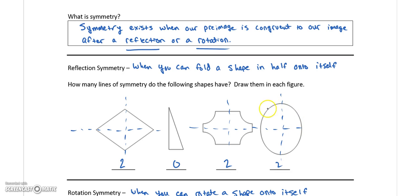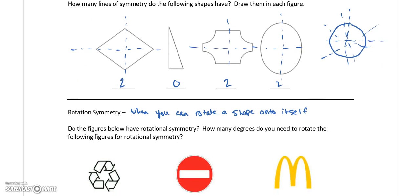Now if this was a circle, how many lines of symmetry do you think it would have? If that was a perfect circle, then it would actually have an infinite number of lines of symmetry, right? As long as I'm going through the center, I could fold that in any way I wanted to and it would work. So a circle is kind of unique. That has an infinite number of lines of symmetry.